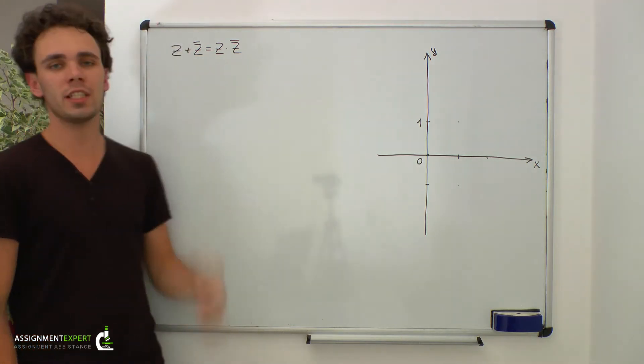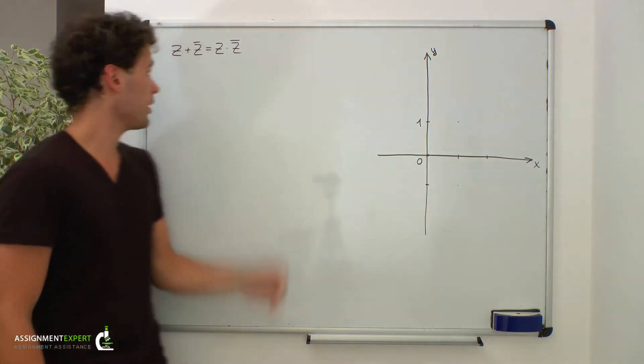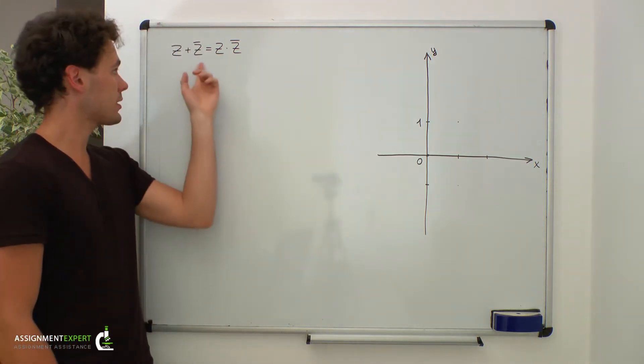Suppose we are given the following equality and we need to graph a set of points defined by it. Here we have the complex number z and its complex conjugate.